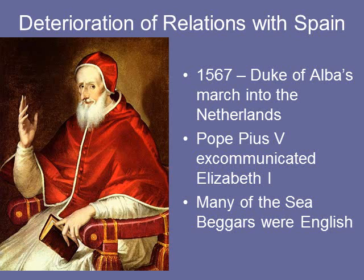Elizabeth was also facing deteriorating relations with Spain. In 1567, the Duke of Alba marched into the Netherlands, and she stopped secretly aiding the Netherlands and began openly giving them money and helping them outright. Pope Pius V excommunicated her. Many of the sea beggars — Spanish criminals and exiles — were English. They gathered together, besieged Brill, and got the violent rebellion against Spanish rule in the Netherlands going.